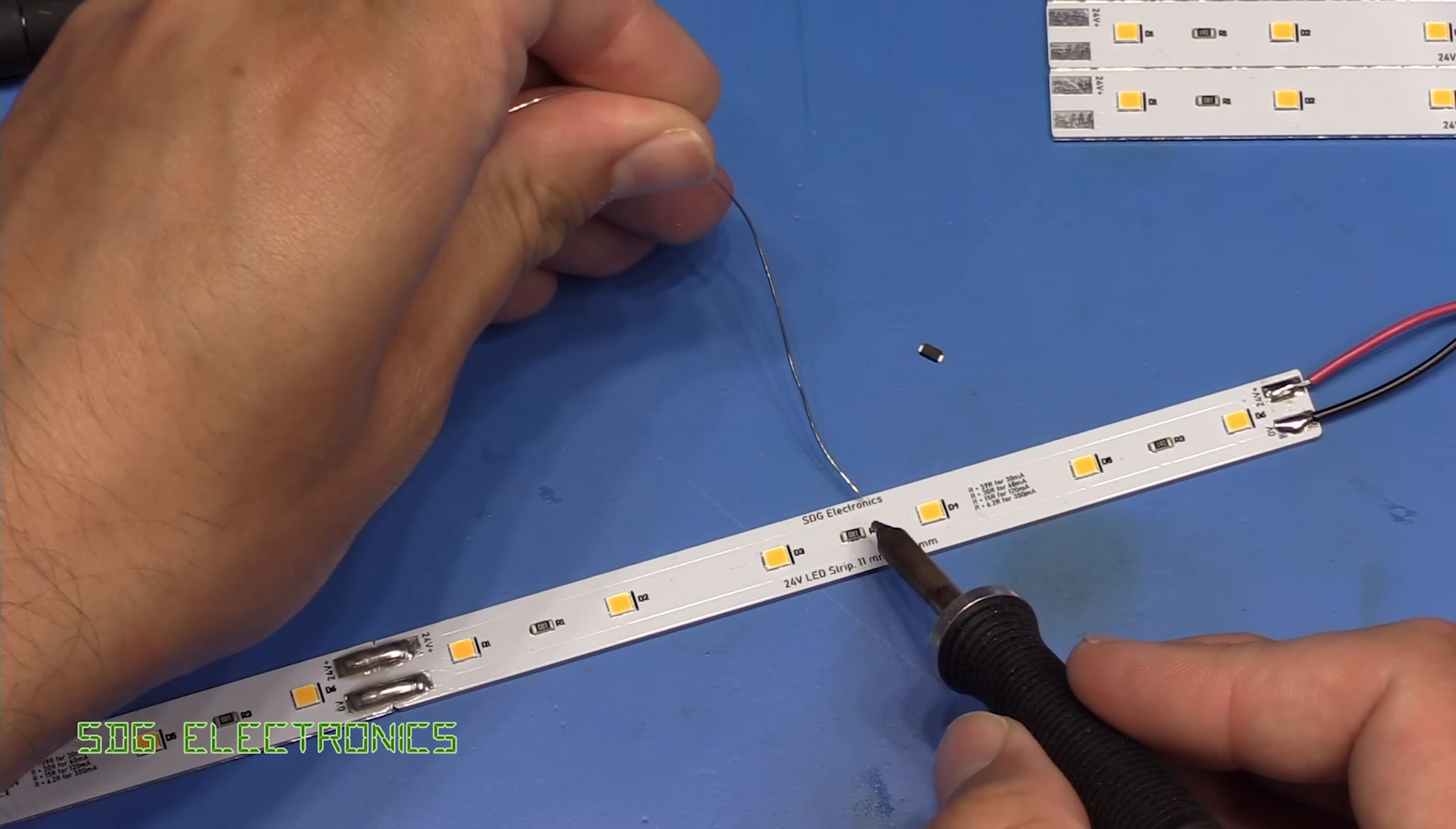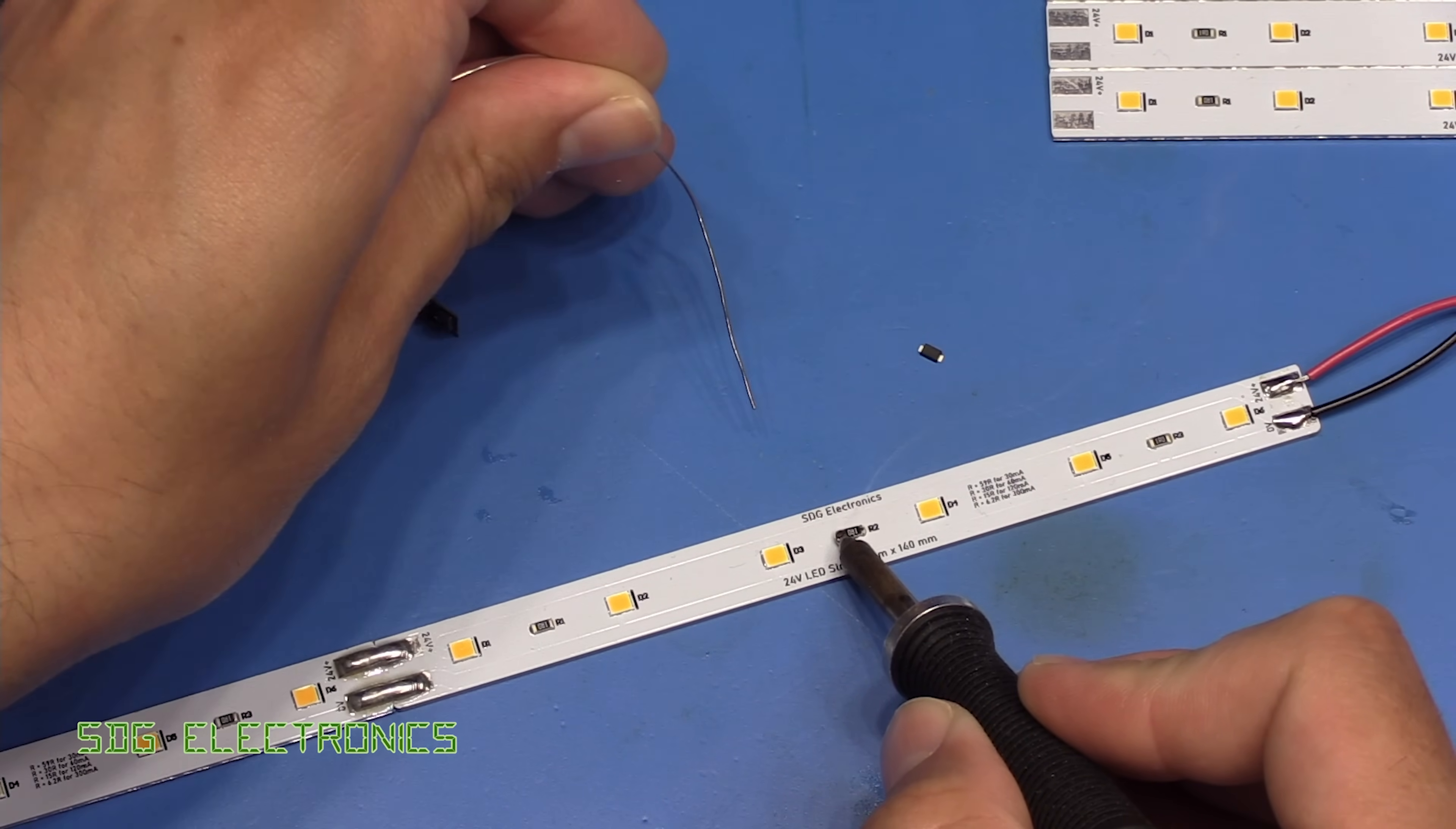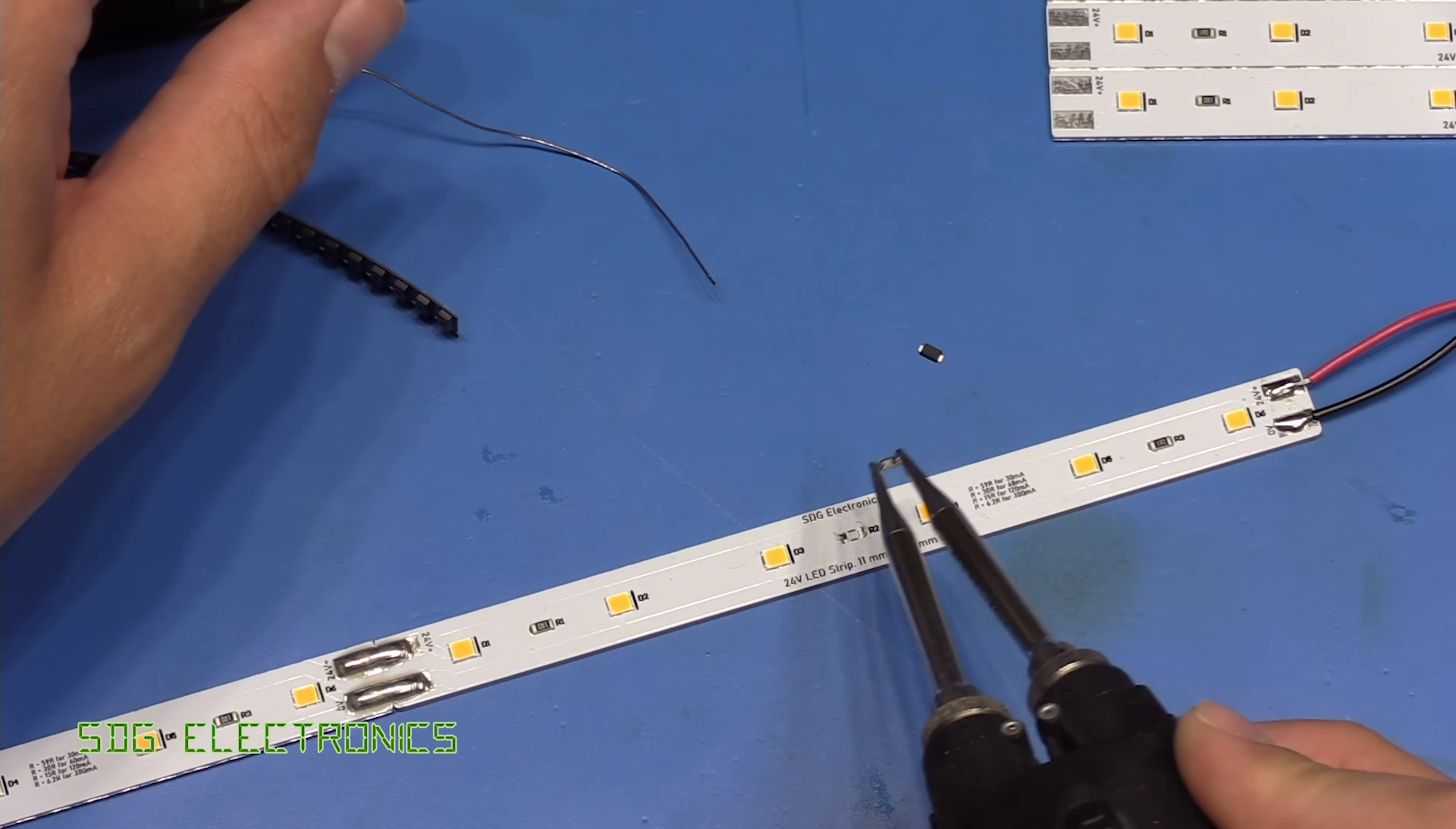So get a bit of solder on the resistor, bit of solder also on the tweezers, and there we go.